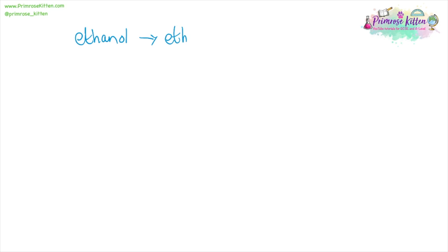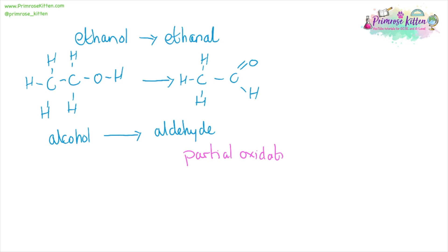Ethanol can be turned into ethanal. We will have the OH functional group being replaced with an O connected with a double bond and then a separate H. This is turning an alcohol into an aldehyde. Here we have a partial oxidation going on. We know that when we're doing this in a practical situation, we need to use acidified potassium dichromate so that we can turn an alcohol into an aldehyde in our partial oxidation reaction.